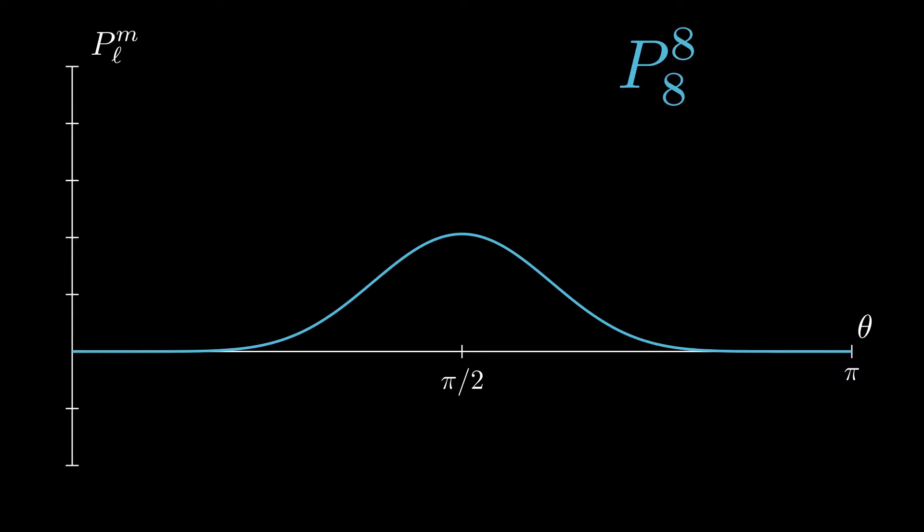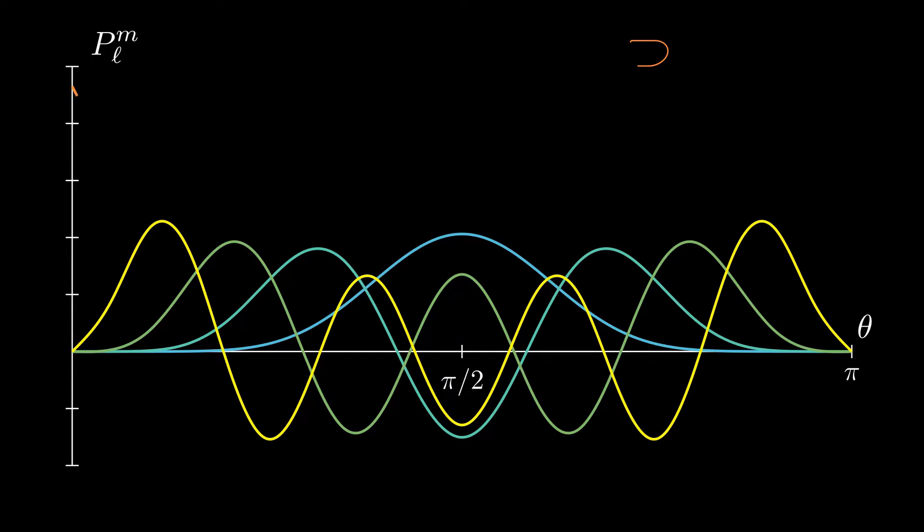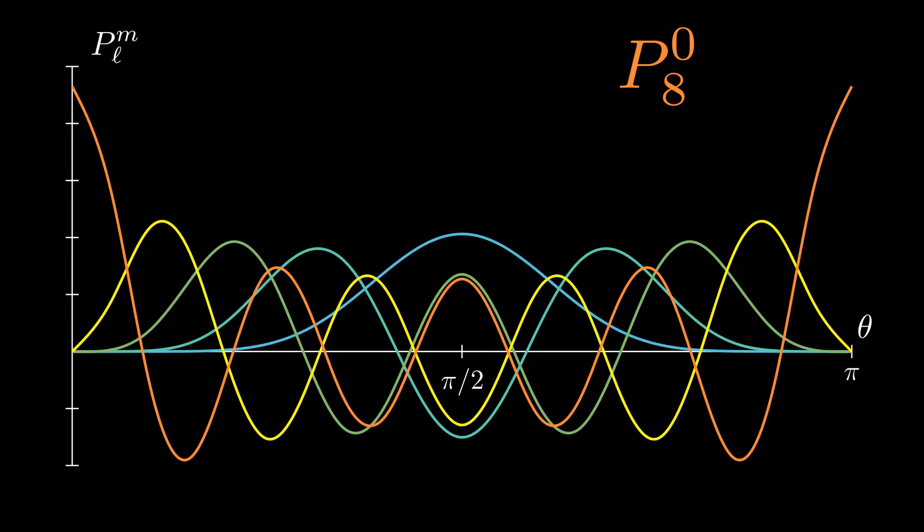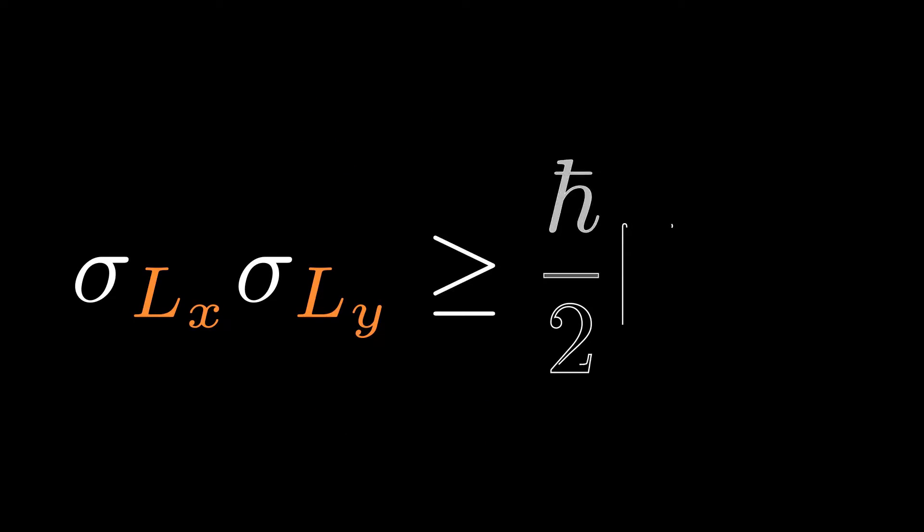However, when the power of cos theta increases, as we use our minus operator, we are more and more likely to find the particle in the polar caps, where theta equals to 0 for north pole, theta equals to pi for south pole. Classically, this is entirely analogous to totaling the orbital plane such that an equatorial orbit gradually becomes a polar orbit. However, beware that a well-defined inclination of orbital plane does not exist in quantum mechanics, as the inability of L_z to commute with either L_x and L_y forbids us to know how much angular momentum there is in the x- and y-axis.